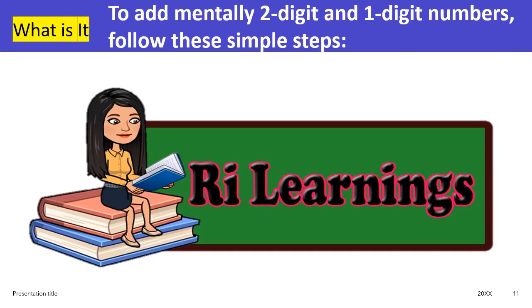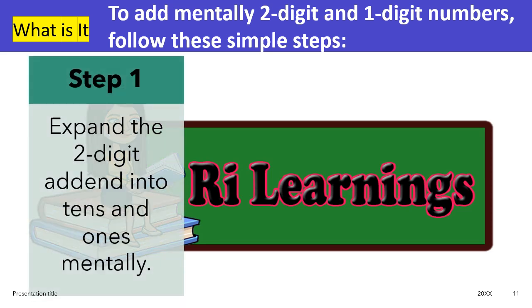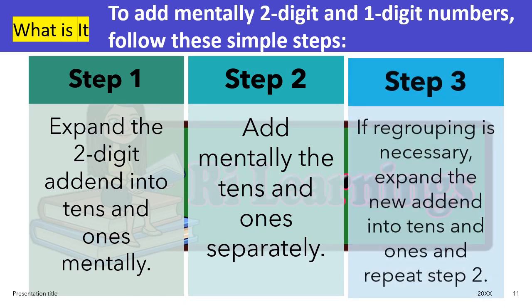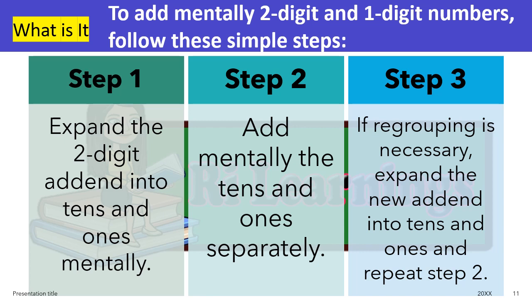To add mentally two-digit and one-digit numbers, follow these simple steps. Step 1, expand the two-digit addend into tens and ones mentally. Add mentally the tens and ones separately. If regrouping is necessary, expand the new addend into tens and ones and repeat step 2.